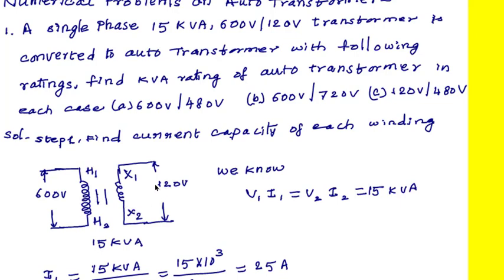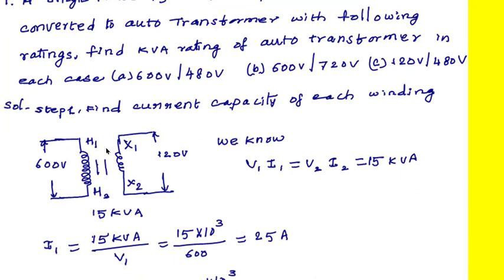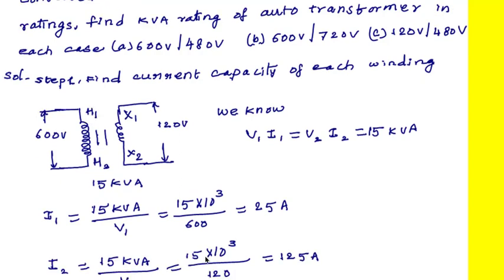Next, the 120-volt winding current capacity. The current that flows is I2, and the terminal voltage is V2. So V2·I2 = 15 kVA, giving I2 = 15 kVA ÷ V2 = 15×10³ ÷ 120 = 125 amperes. This is the low-voltage winding current-carrying capacity. The high-voltage winding current capacity is less, whereas the low-voltage winding capacity is more.